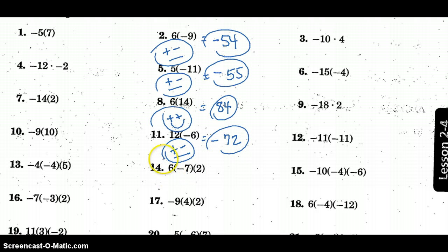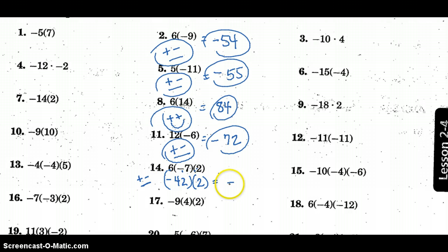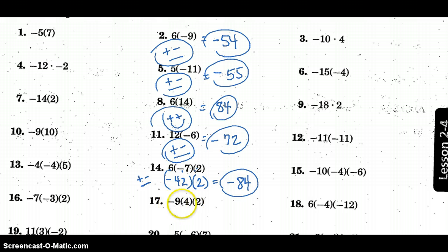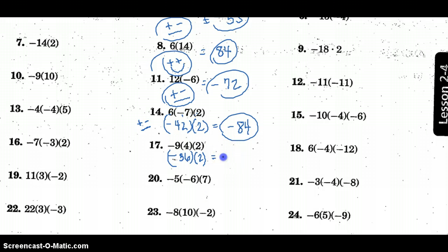Working from left to right: first I have a positive and a negative, so it's negative 42 times 2. That's a negative times a positive, which also results in a negative answer. You can also count: we have two positives and one negative, so that's an odd number of negative signs, which will always give you a negative outcome. Negative 42 times positive 2 is negative 84. Similarly, negative 36 times 2 gives us negative 72.